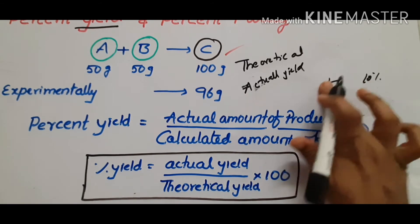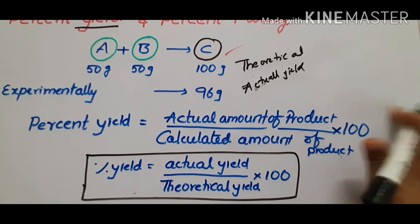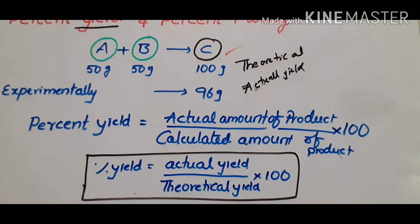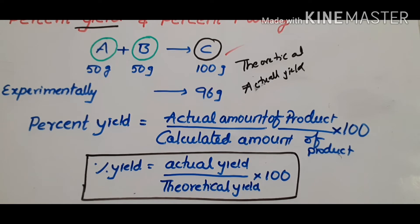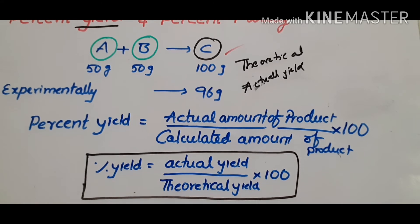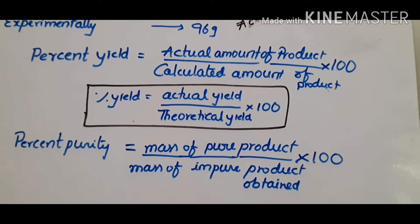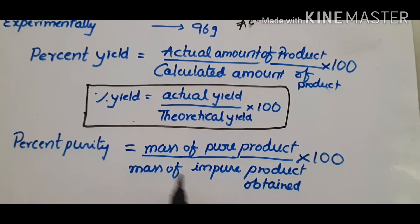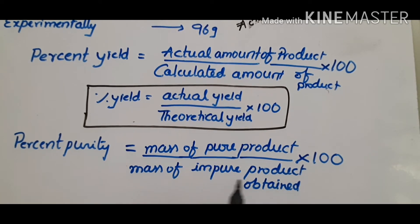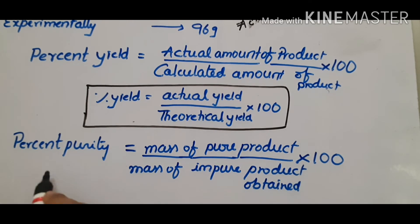If we are making the reaction under optimized conditions, we will get more yield. Yield equals the calculated amount. Next, what is percent purity? Percent purity is the mass of pure product divided by the mass of impure product obtained, multiplied by 100, which gives you percent purity.